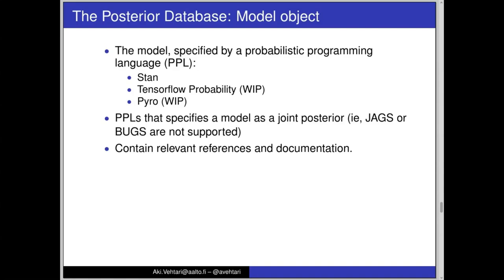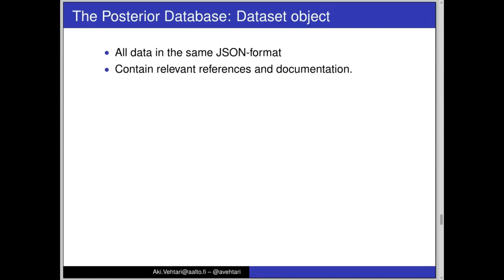The model object, currently we have them described with Stan language, but we are going to support also TensorFlow Probability and Pyro to get more people to use it. Currently the design is that only probabilistic programming languages that specify model as joint posterior, no JAGS or BUGS type, including relevant references and documentation.